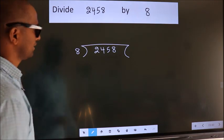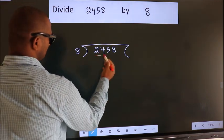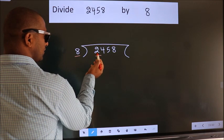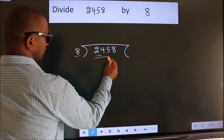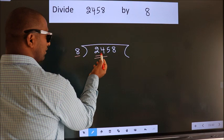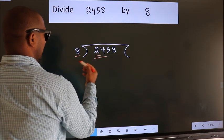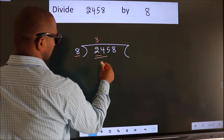Next. Here we have 2. Here 8. 2 is smaller than 8. So we should take two numbers, 24. When do we get 24 in 8 table? 8 threes, 24.